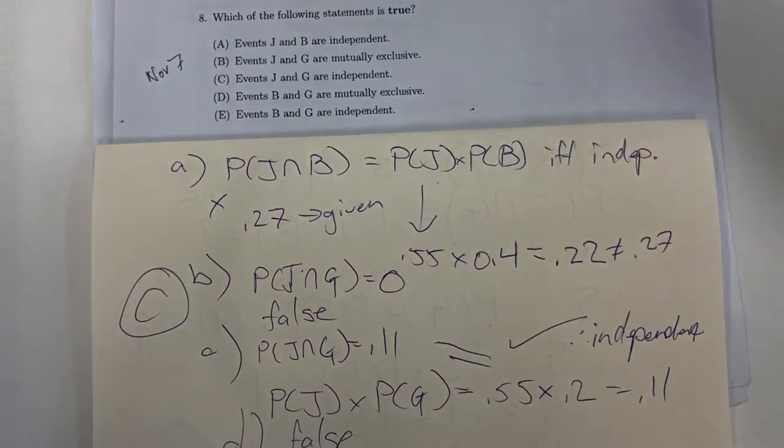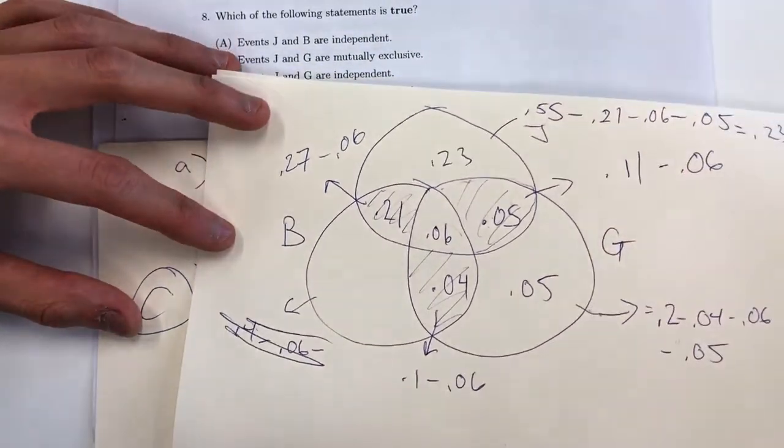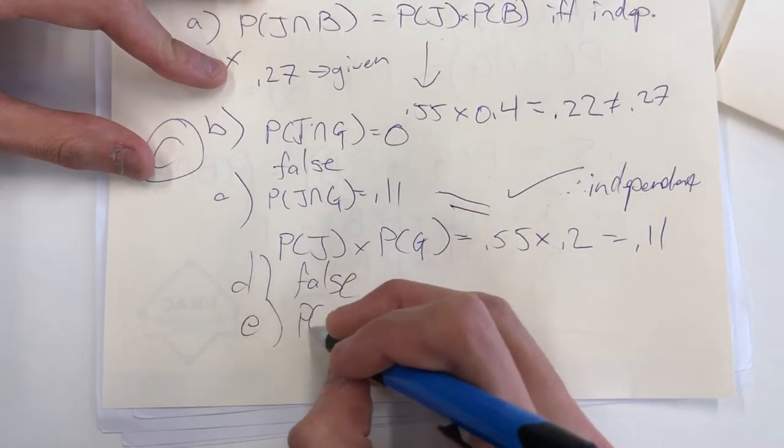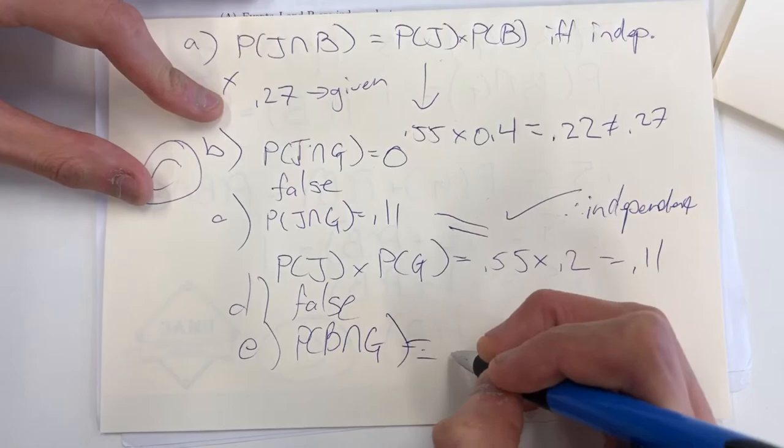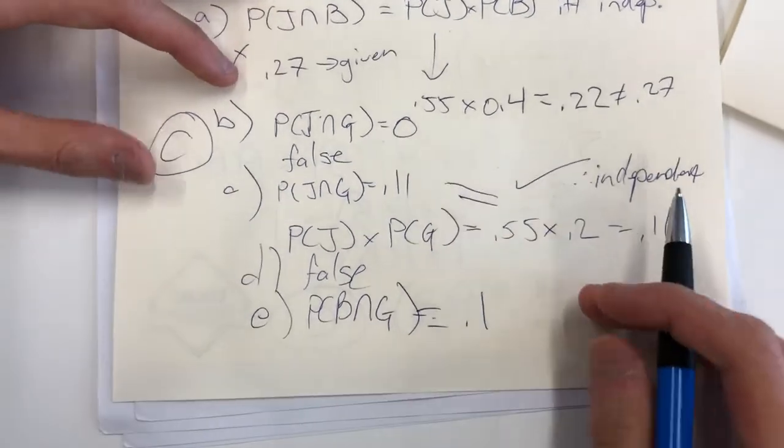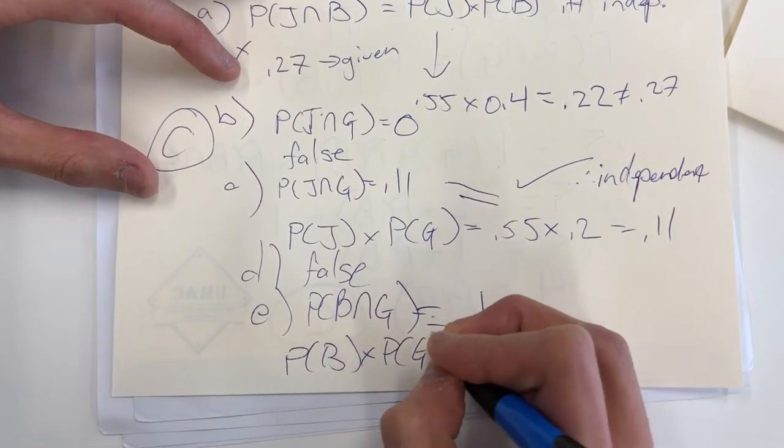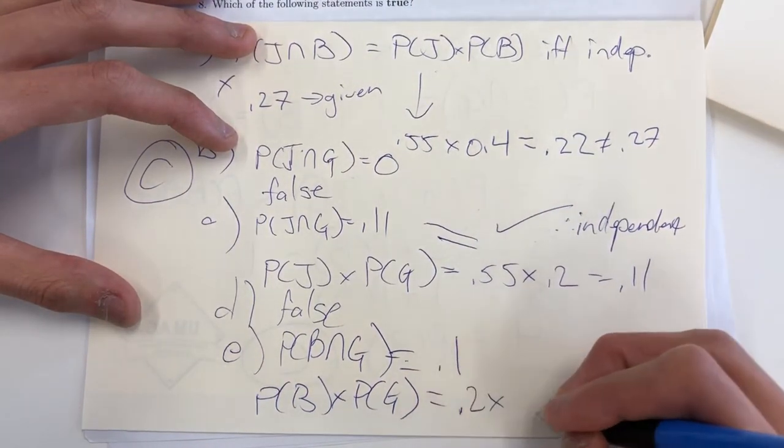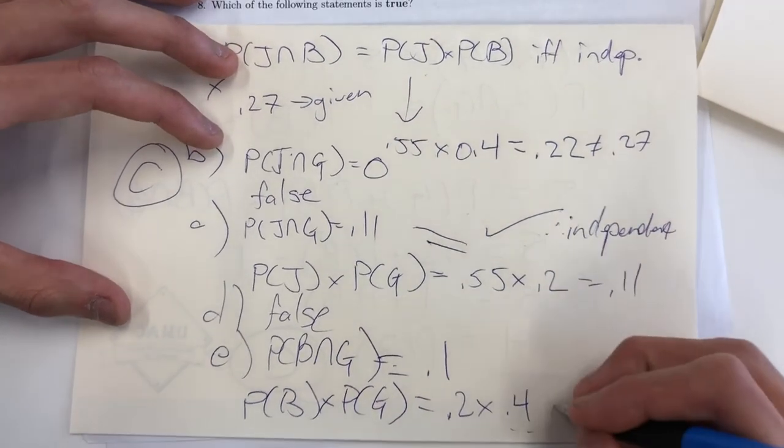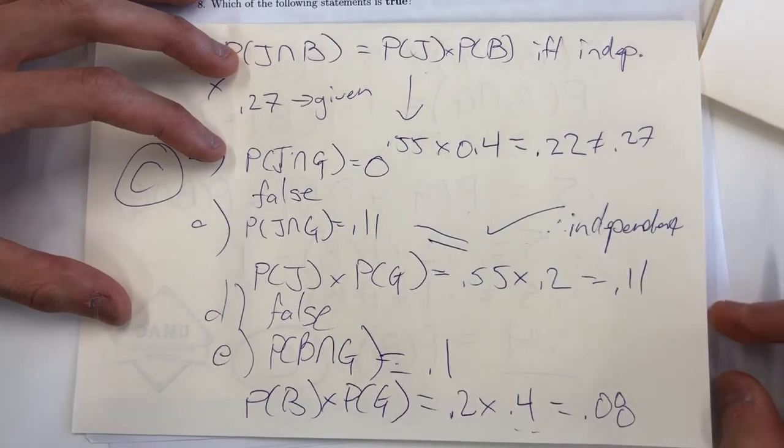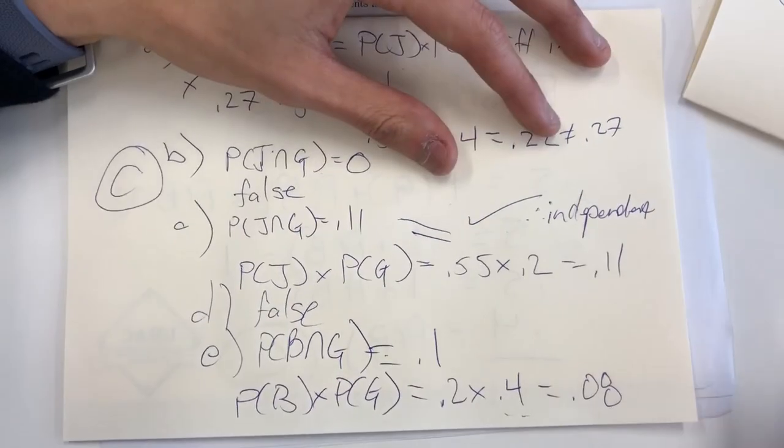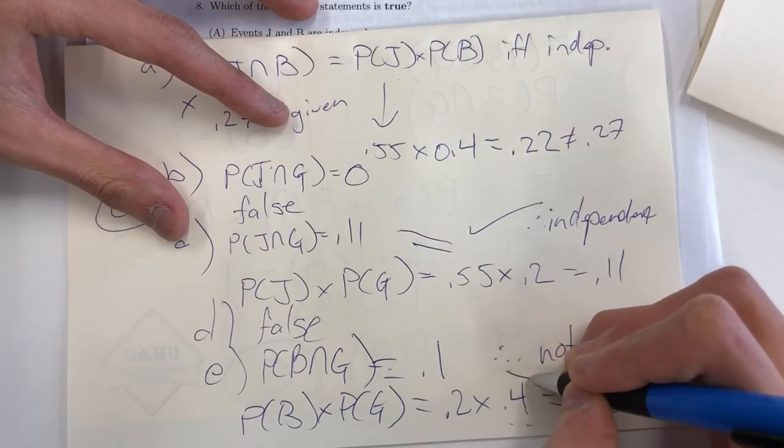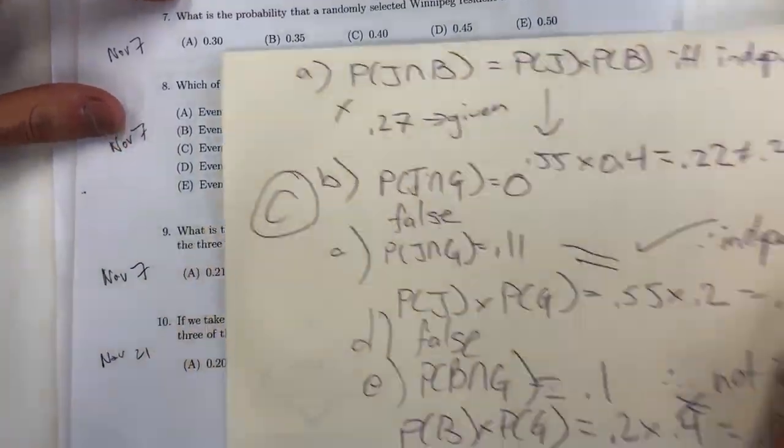Letter E. Events B and G are independent. The probability that they're a Bomber and a Gold Eye fan is 10%. P(B∩G) has to equal 10%, given to us in the question. If we take the product of the two, we get 0.2 multiplied by 0.4, which we calculated in question 7, and that equals 8%. Since 8% does not equal 10%, we know it's not independent. So the only correct letter choice here should be C.